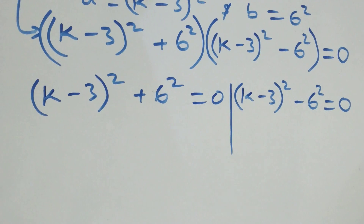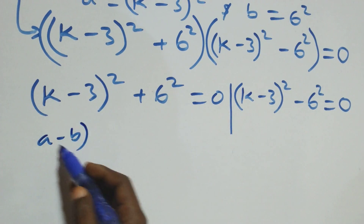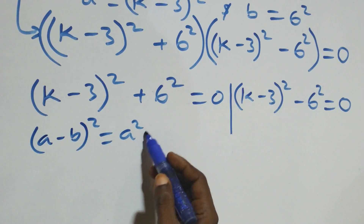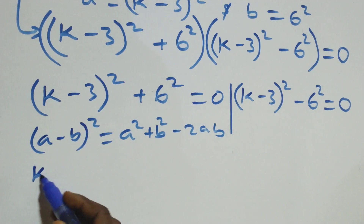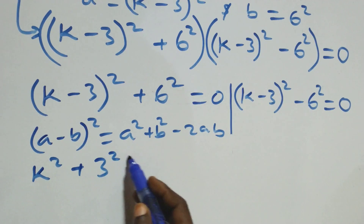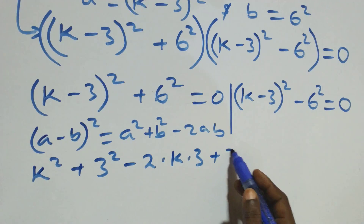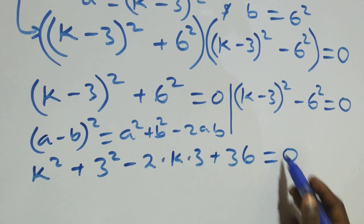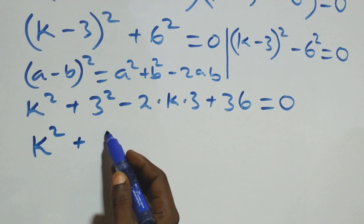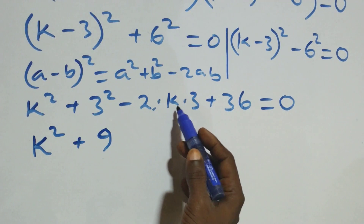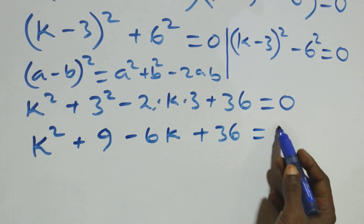Solving the first case: expanding (a minus b)^2 gives a^2 plus b^2 minus 2ab. So we have k^2 plus 9 minus 6k plus 36 equals 0.